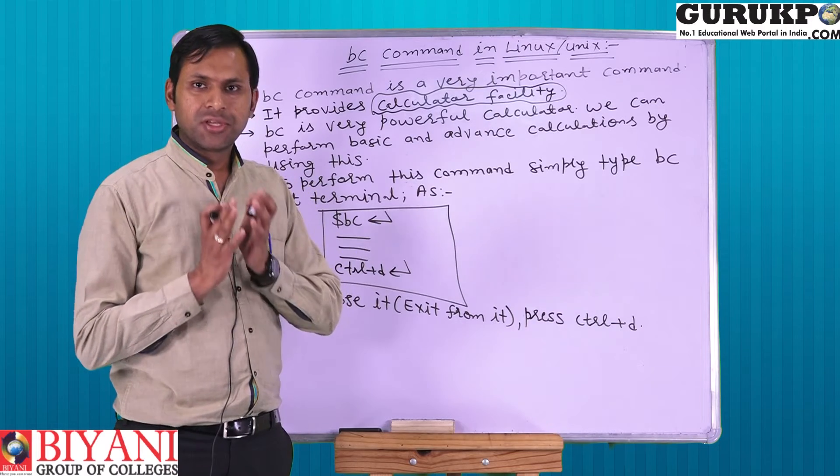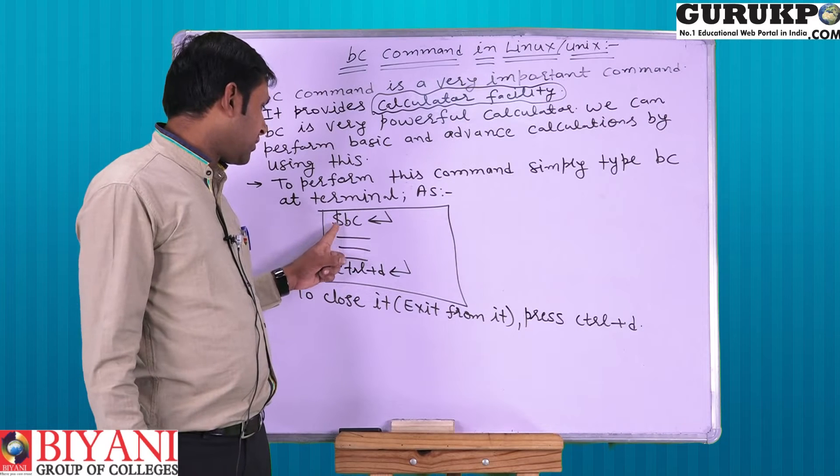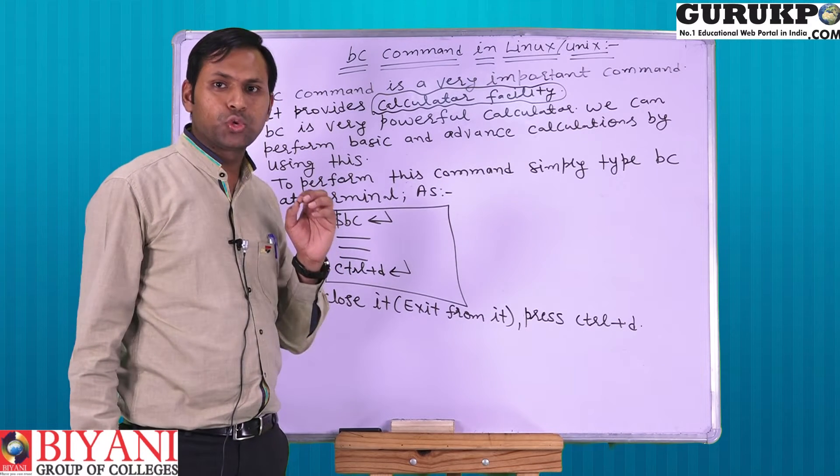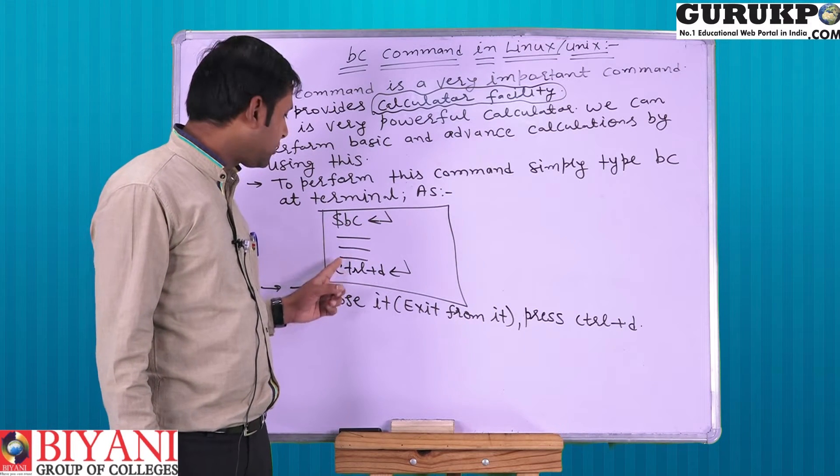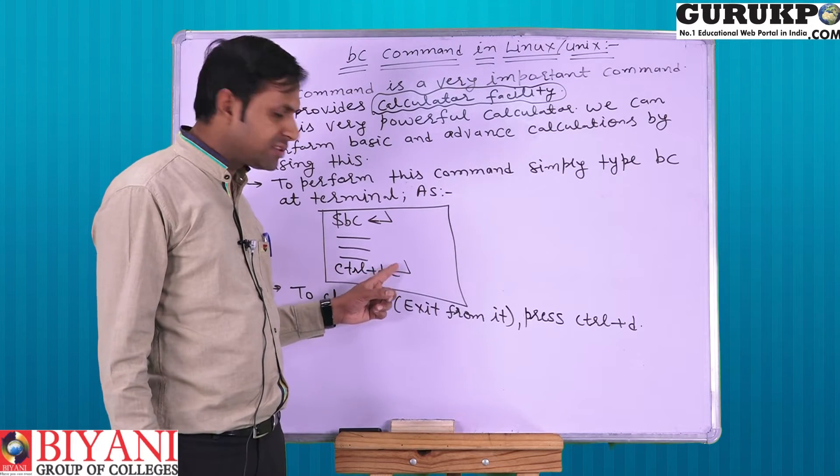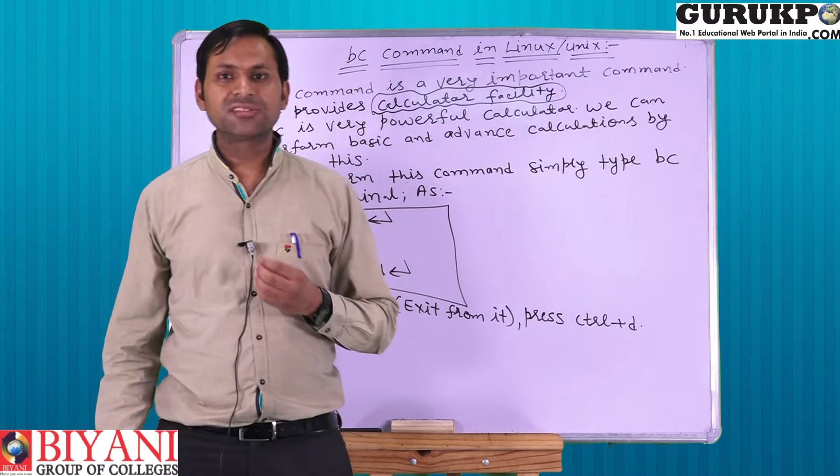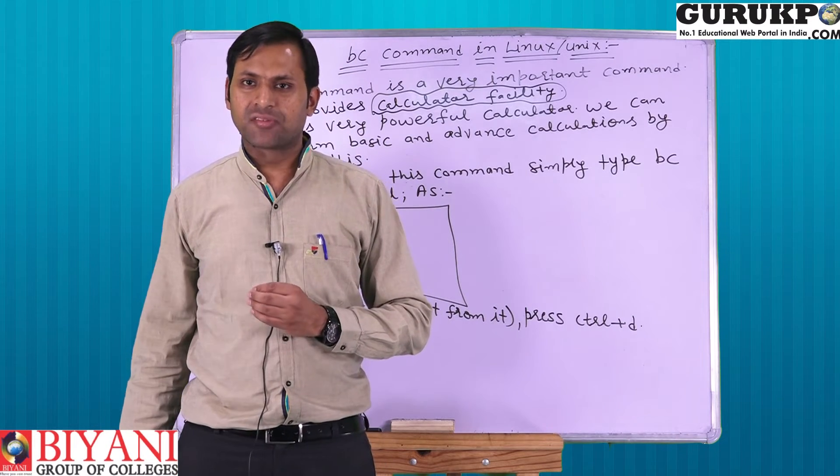Now we will discuss what type of operations we can perform here one by one. So the basic first task by using basic command is that we can perform other tasks. Number one, how to use BC? By default we get dollar symbol known as user prompt, press BC and enter, perform your task and then control plus D, by this we exit from basic command. Now we will discuss what type of operations we can perform here one by one.